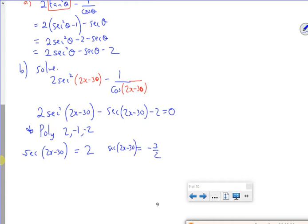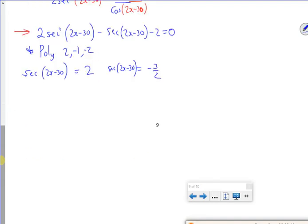So let's make sure we're okay with that. So I've changed it all in terms of secant and secant squared, so I've got a polynomial. Part b changes the θ into a 2x minus 30. So everything's the same. I've got the polynomial, I've got the quadratic, but now it's got a 2x minus 30 in it.